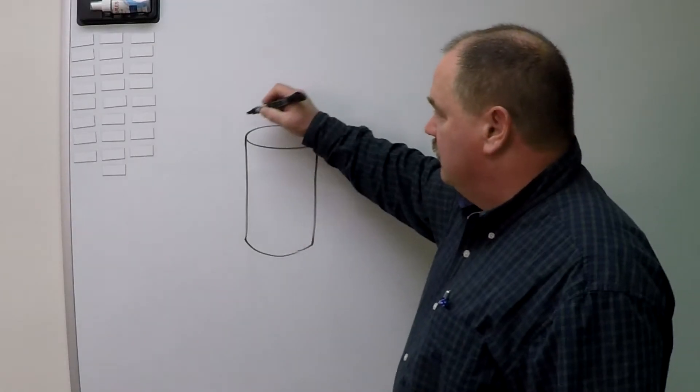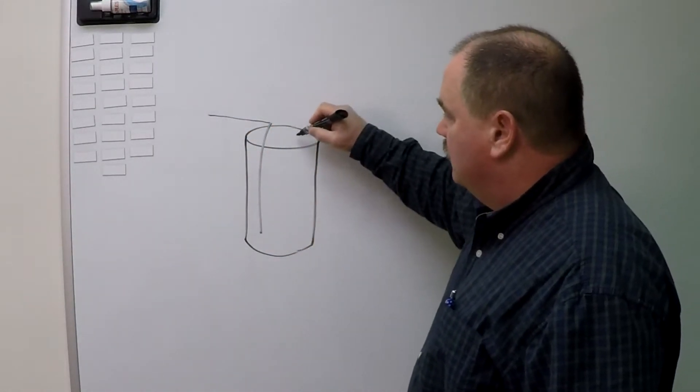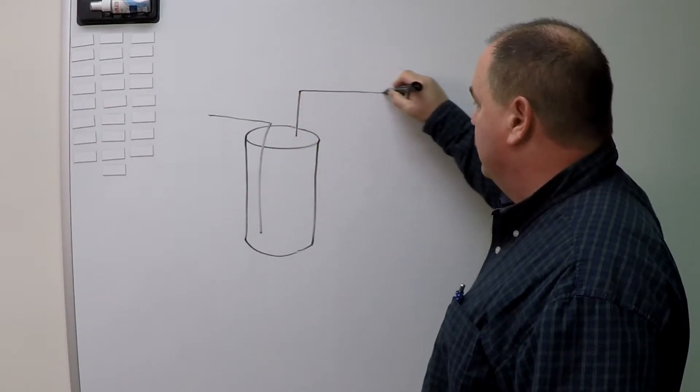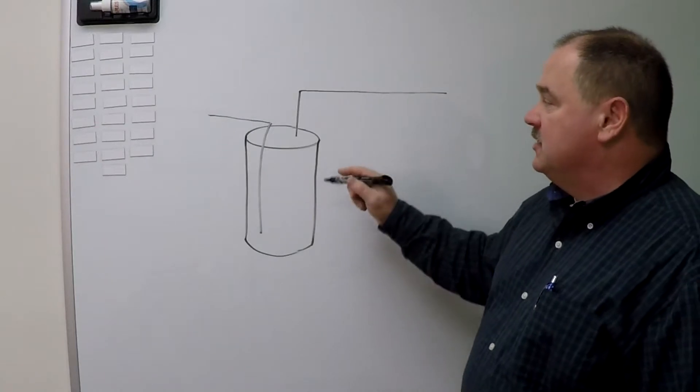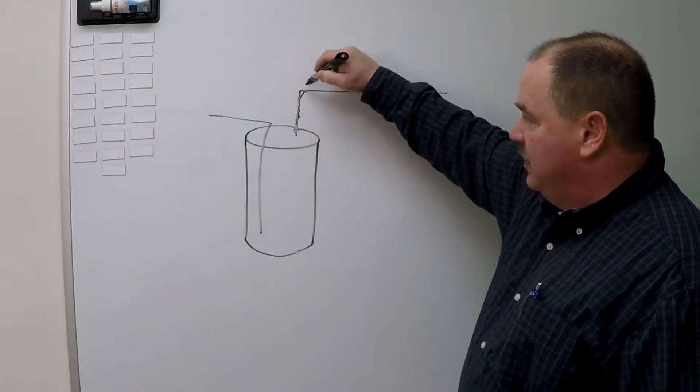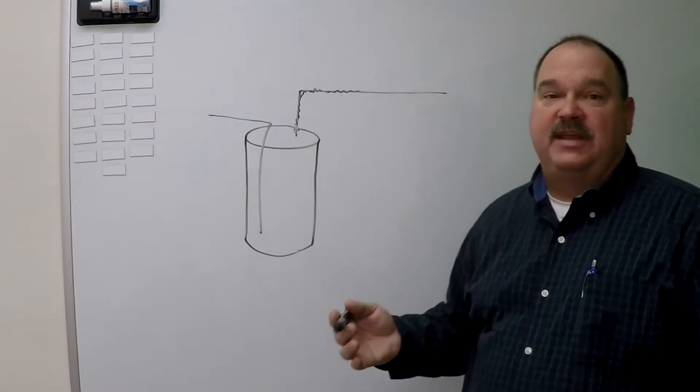A tank-type water heater has cold water that comes in through a dip tube that's delivered all the way to the bottom of the tank. Your hot water tap comes off the top and goes out to your house. This tank is always on. So hot water can migrate up that pipe. As long as that pipe's going uphill, you may have hot water in several feet of pipe.